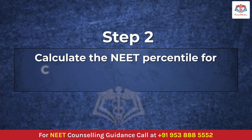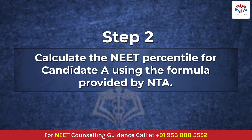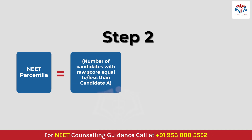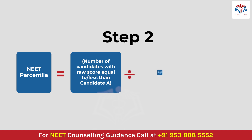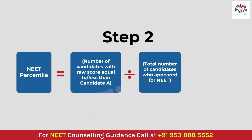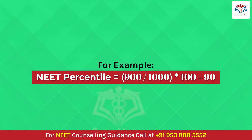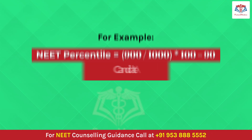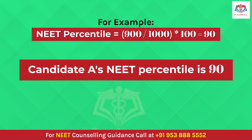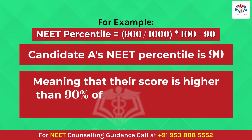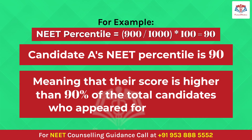Step two: calculate the NEET percentile for Candidate A using the NTA formula. NEET Percentile = (Number of candidates with raw score equal to or less than Candidate A's score) ÷ (Total number of candidates who appeared for NEET) × 100. This gives 900 ÷ 1000 × 100 = 90 percentile, meaning their score is higher than 90% of the total candidates who appeared for the exam.